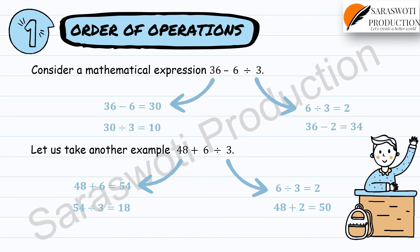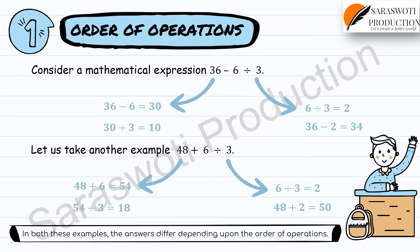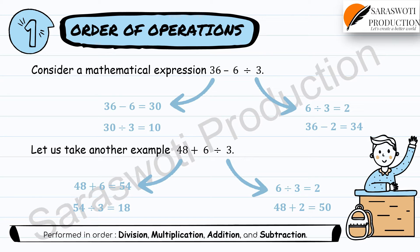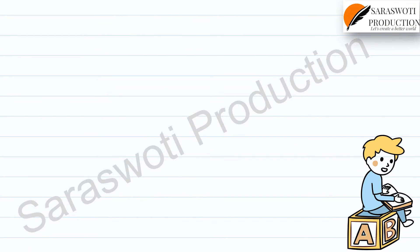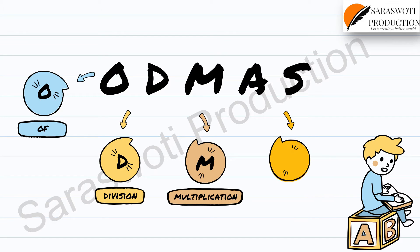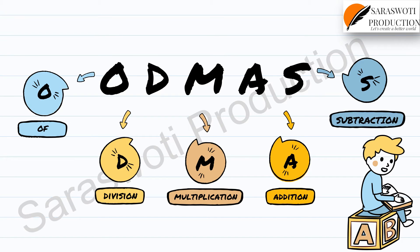In both these examples, we find that the answers differ depending upon the order in which the operations are performed. To avoid this kind of ambiguity, operations in a mathematical expression are performed in the following order: first Division, second Multiplication, third Addition, and finally Subtraction. This order is expressed in short as ODMAS.